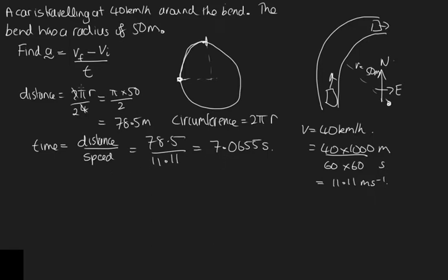So let's substitute everything in now. Now, what we need to remember is that these are vectors here. So we've got that the acceleration is equal to 1 over the time, which is 1 over 7.065. And then we've got the final velocity, which is to the east. So this is 11.11 in this direction, minus the initial velocity, which is 11.11 in the northerly direction. Now, remember, when we're dealing with vectors,